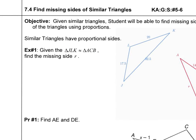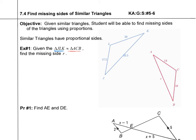We have the blue triangle and the red triangle, and we need to look for corresponding parts. We can do that by looking at the similarity statement, or just by looking at the triangles. I can see that JL corresponds to AC because 17.5 is the shorter side out of those two, and 14 is the shorter side out of the other two. Also, JL corresponds to the first two letters AC in the statement, so JL corresponds to AC.